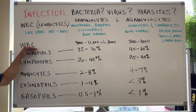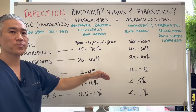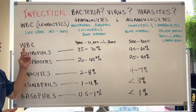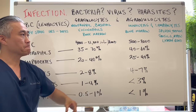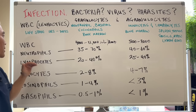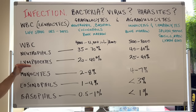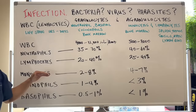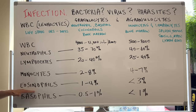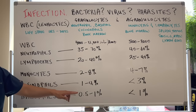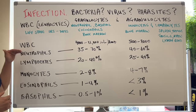White blood cell conventional lab values are 4,000 to 11,000; functionally, 5,000 to 8,000. Neutrophils: 35% to 70% conventional, 40% to 60% functional. Lymphocytes: 20% to 40% conventional, 25% to 40% functional. Monocytes: 2% to 8% conventional, 4% to 7% functional. Eosinophils: 1% to 4%, below 3% functionally. Basophils: 0.5% to 1%, below 1% functionally.